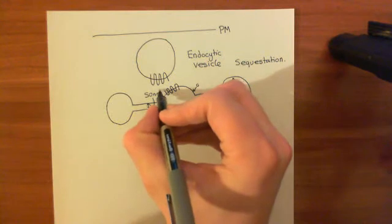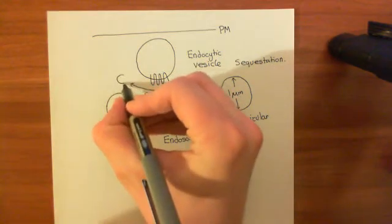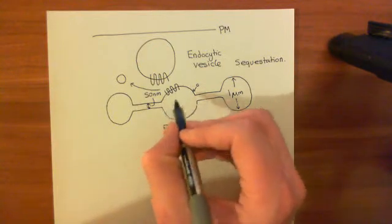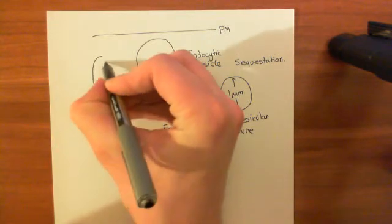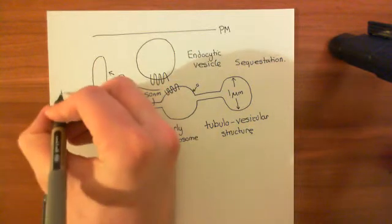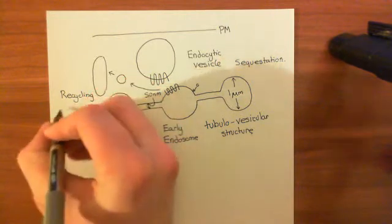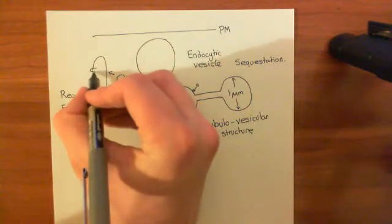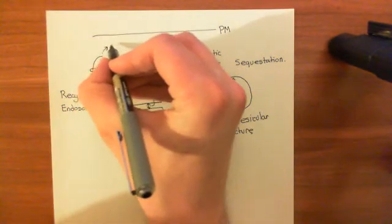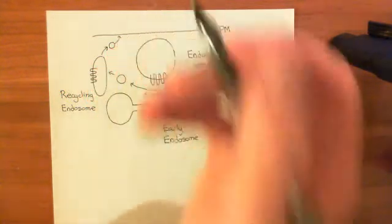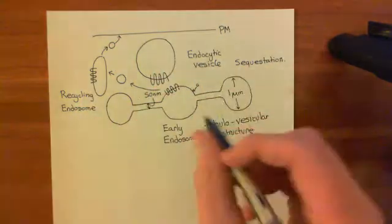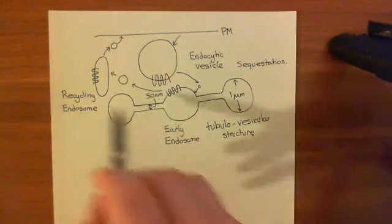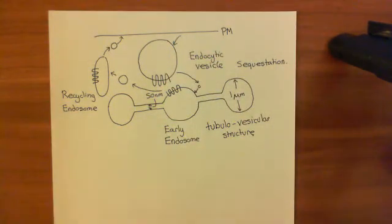Later on, once the agonist has been removed, vesicles can bud back off from the early endosome containing some of the stored beta-2 adrenergic receptors. These go to a structure known as the recycling endosome, where the beta-2 adrenergic receptors are temporarily held. Finally, the recycling endosome buds off a vesicle that exocytoses onto the plasma membrane, and the beta-2 adrenergic receptor is recycled back. So there is a recycling process, but there is also a degradation process.